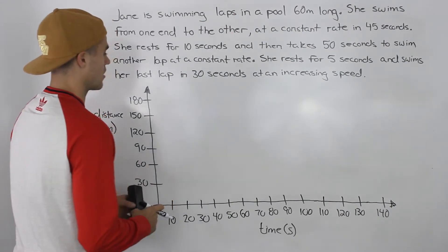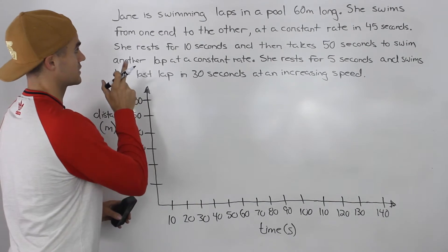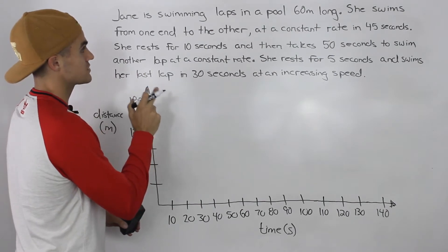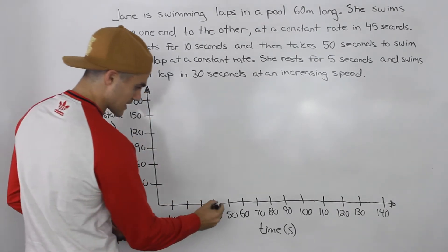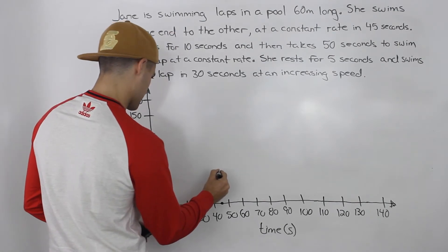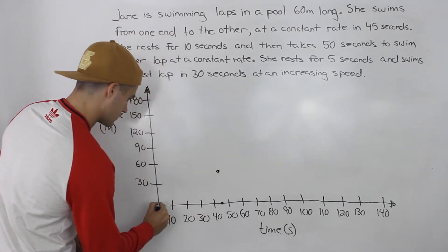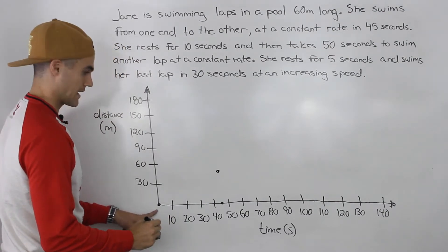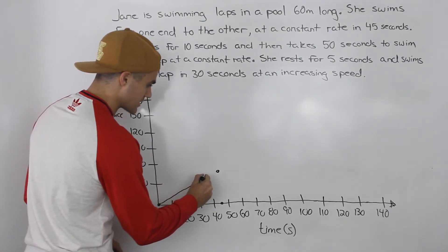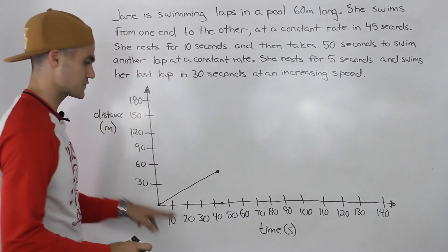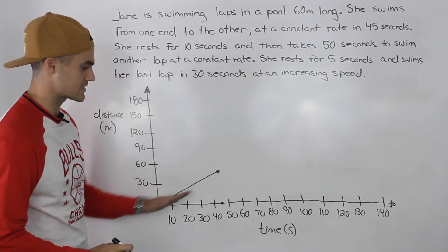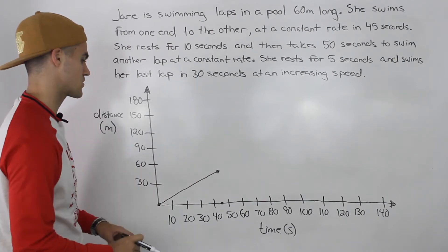Let's draw this distance versus time graph. Jane is swimming laps in a 60 meter pool. She swims from one end to the other at a constant rate in 45 seconds. So at 45 seconds, she swims a distance of 60 meters — that's how long the pool is. At zero seconds she hasn't swum any distance, so we're starting at the origin. Since she's swimming at a constant rate, this is just going to be a straight line, because on a distance versus time graph, constant speed produces a straight line.